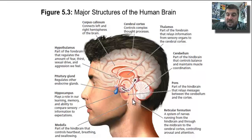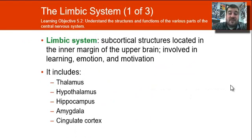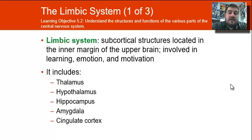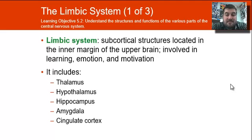The reticular formation runs up through the middle of the brain. The limbic system, as part of the forebrain, is a whole bunch of structures in a circle. It's involved in learning, emotion, and motivation, and it includes the thalamus, the hypothalamus, the hippocampus, the amygdala, and the cingulate cortex.